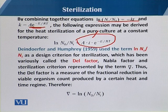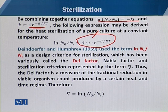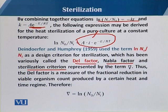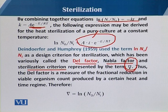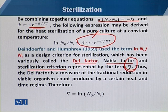According to Del Dindorfer and Humphrey (1959), they used the term ln(N0/Nt) as the design criteria for sterilization. That factor is sometimes called the Del factor, Nabla factor, or sterilization criteria. The Del factor is the measure of the fractional reduction in viable organism count produced by a certain heat and time regime.